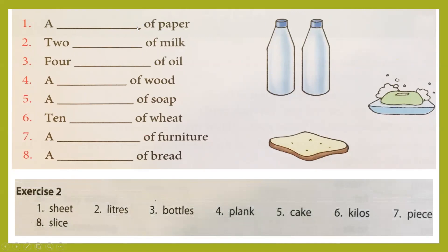The answers: number 1, a sheet of paper. Number 2, two litres of milk. Number 3, four bottles of oil. Number 4, a plank of wood. Number 5, a cake of soap. Number 6, ten kilos of wheat. Number 7, a piece of furniture. Number 8, a slice of bread. Please write these answers in the blank lines provided with pen, and take a screenshot to copy them down into your workbook later.